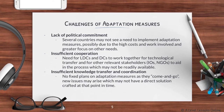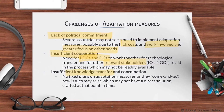There are several challenges to adaptation measures. First is a lack of political commitment — several countries may not see a need to implement such measures, possibly due to the high cost and work involved and a greater focus on other needs. There could also be insufficient cooperation, as there is a need for both less developed countries and developed countries to work together on technological and knowledge transfer between relevant stakeholders.